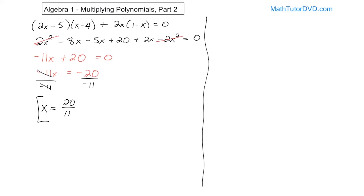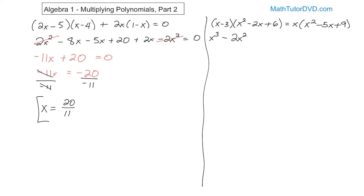Let's do one more problem: (x - 3)(x² - 2x + 6) = x(x² - 5x + 9). We have x's everywhere, so we start multiplying and then collect terms. On the left: x times x² gives x cubed, x times negative 2x gives negative 2x squared, x times 6 gives 6x. Then negative 3 times x² gives negative 3x squared, negative 3 times negative 2x gives positive 6x, and negative 3 times 6 gives negative 18.